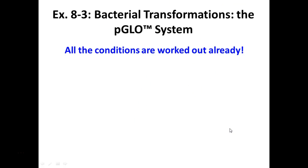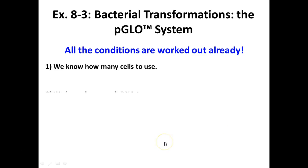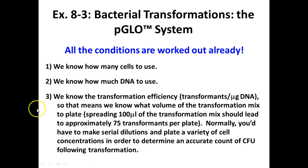All the conditions have been worked out for us since this is a kit. We know how much transformation solution to use, how much plasmid to add, and how many cells to plate. After spreading 100 microliters of cells onto a plate, we should get about 75 cells that transform. You should hopefully end up with approximately 75 little glowing fluorescent green colonies on your plate.